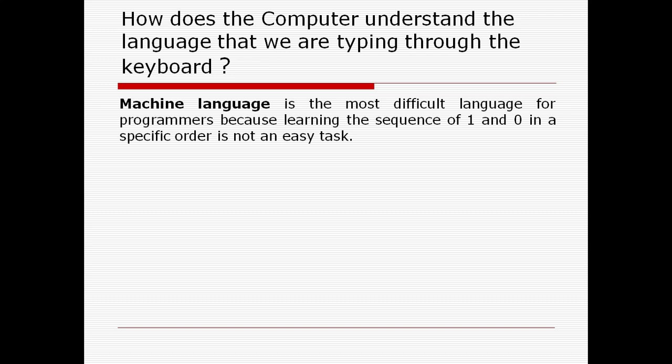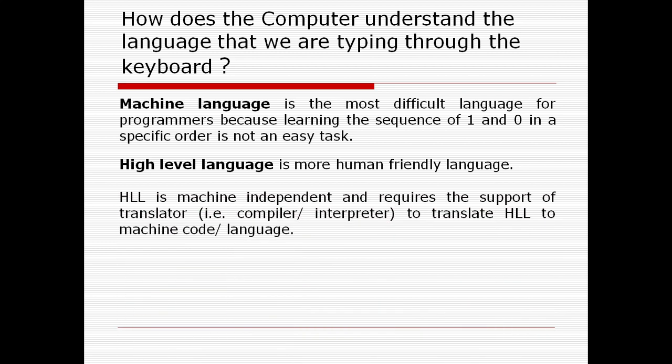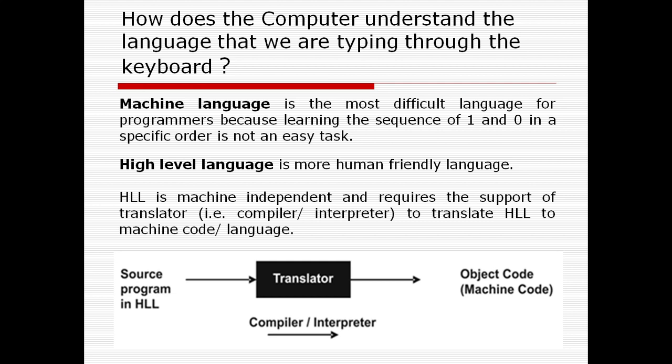High-level language is more human-friendly language. High-level language is machine independent and requires the support of a translator, that is, compiler and interpreter, to translate high-level language to machine code and machine language. We generally program in high language which is called source program, converted by the compiler and interpreter and generates an object code which is called machine language or machine code. Now we can say that we get a clear idea how the computer understands the languages that we are typing through the keyboard.